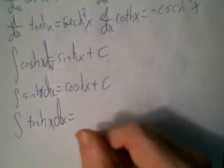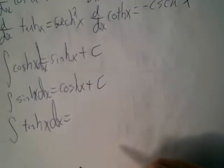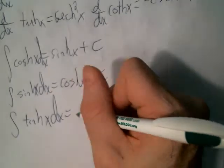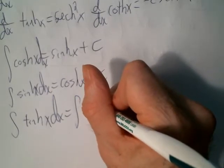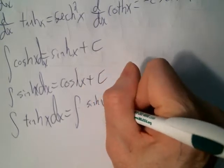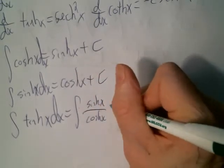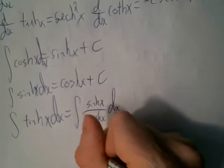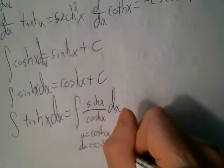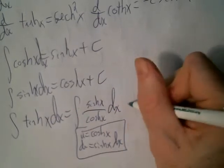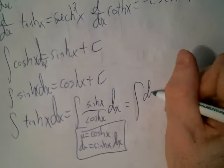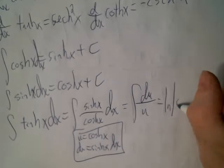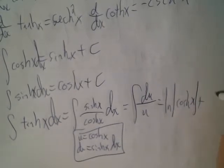For tanh, we'd need to do a u-substitution. The integral of tanh is the integral of sinh over cosh. Let u equal cosh; then du is sinh dx, which is basically just the numerator. So this becomes the integral of du over u, which is ln|u|, i.e., ln|cosh(x)| + C.